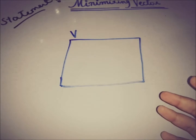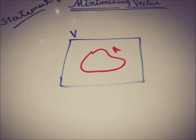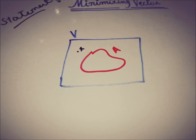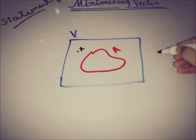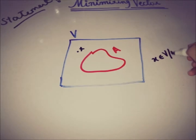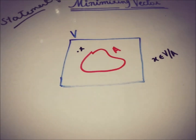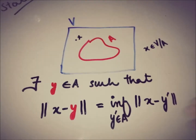Let V be an inner product space and let A be a non-empty complete convex subset of V. We take an element X that is in V but not in A, so X belongs to V minus A. The claim of the theorem is that there is a unique element in A such that the norm of the difference is equal to the infimum.